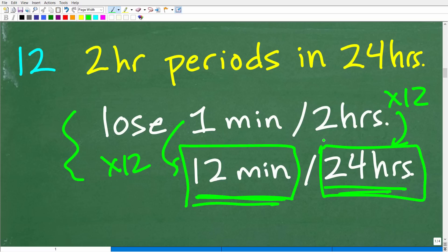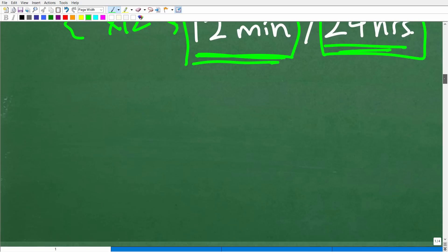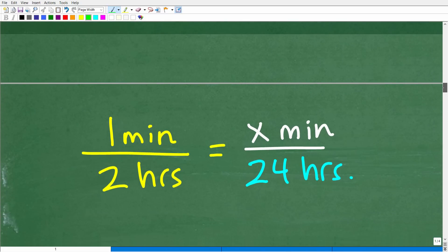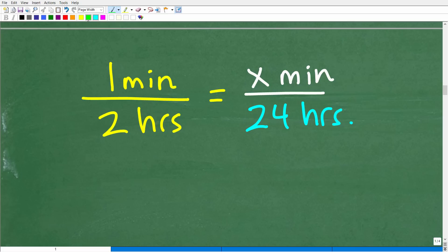Now this is actually more confusing than setting up a simple proportion. So let me show you this, and this would be the recommended way to set this problem up, in my humble opinion. So we know that the clock is going to lose one minute per every two hours. This is the rate the clock is losing time. One minute for every two hours.